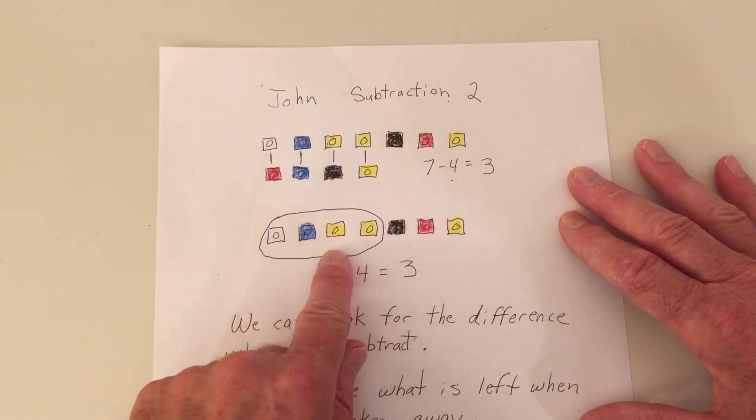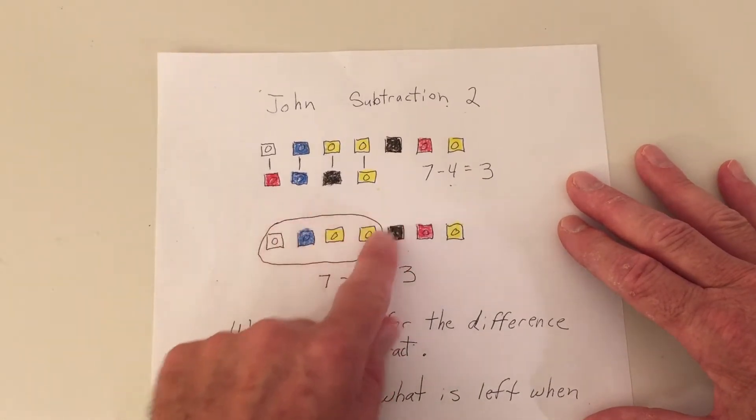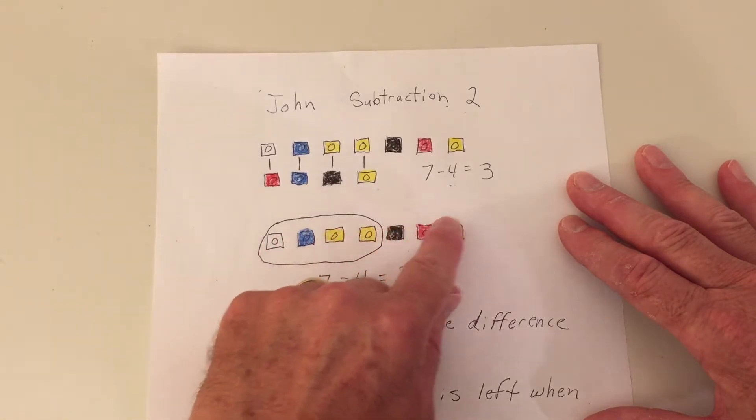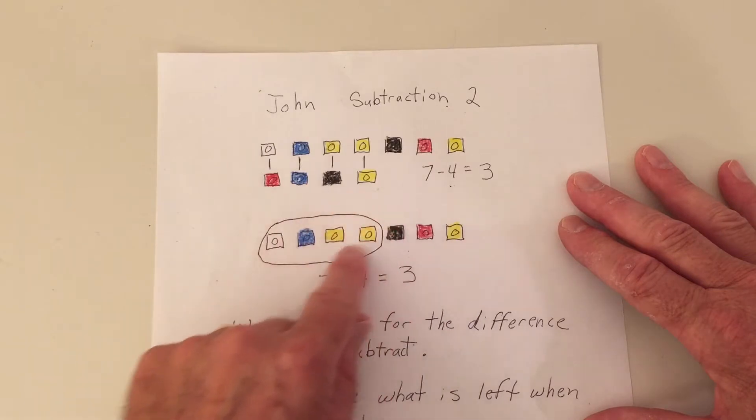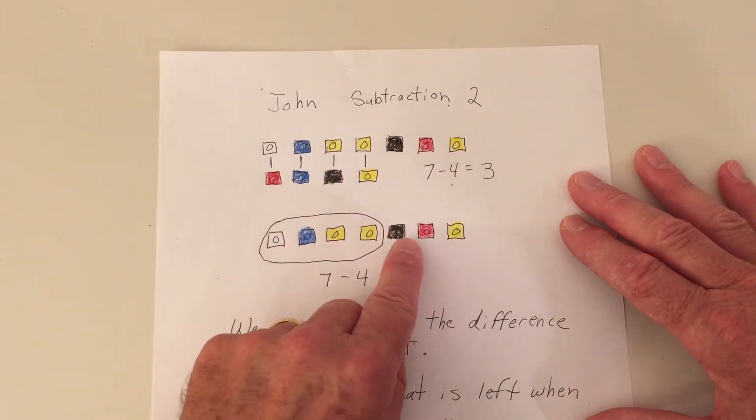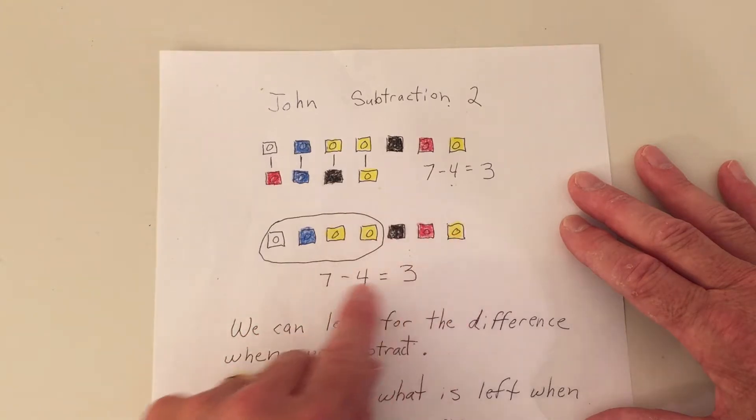Three. And here I did a circling to do the takeaway part. I have seven blocks. One, two, three, four, five, six, seven. And I circled these to take them away. And what would be left over? One, two, three. Seven minus four equals or is three.